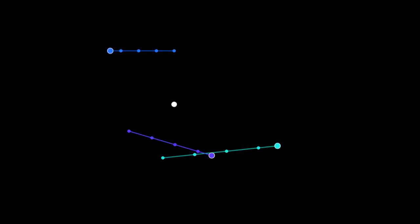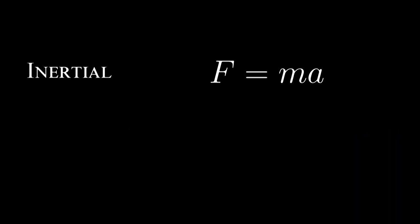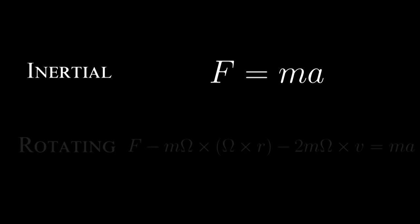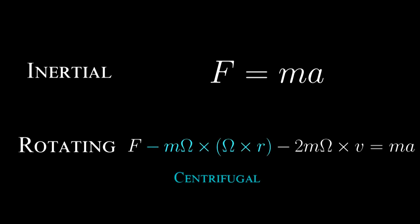If no forces are acting upon an object, the object moves in a straight line, and force equals mass times acceleration. If you want to use a rotating reference frame, you have to add in two extra forces: the centrifugal force and the Coriolis force.